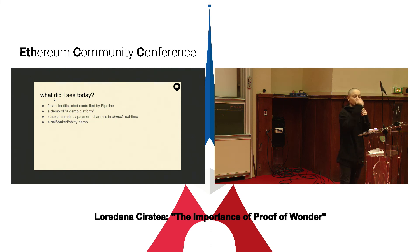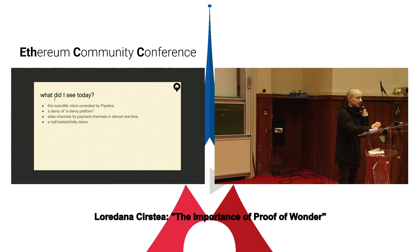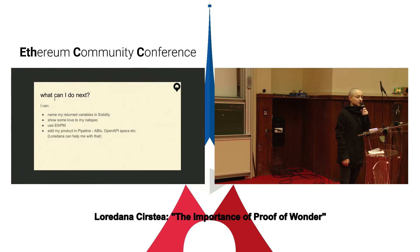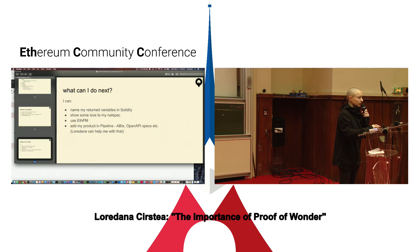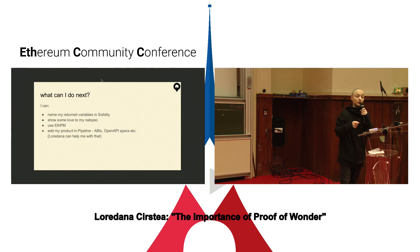One thing we have in mind for Pipeline is structuring of inputs and outputs — if you have objects in those inputs and outputs, to be able to destructure them into multiple fields so you can better connect them with other inputs and outputs. A half-baked demo — I knew that before coming on stage. What you can do: please name your return variables in Solidity, because we have documentation. Something people usually don't do is not name the return variables in Solidity. Also show some love to your natural language specification, and use ETH PM so your contracts are available to others to build on top of.